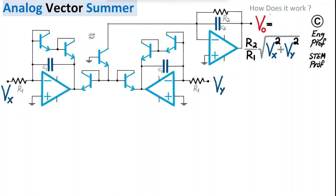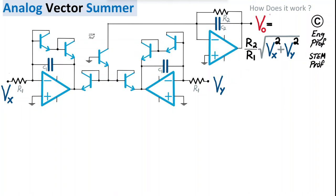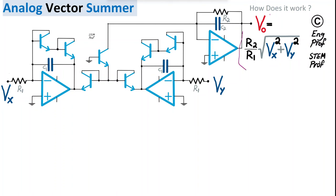We need to prove that Vout is proportional to the vector summation of the two input voltages in the form of R2/R1 times the square root of Vx squared plus Vy squared. Can we quickly show and prove this operation and formula?